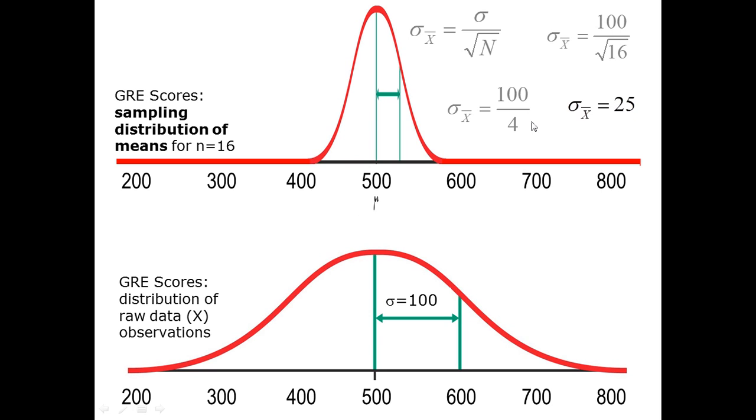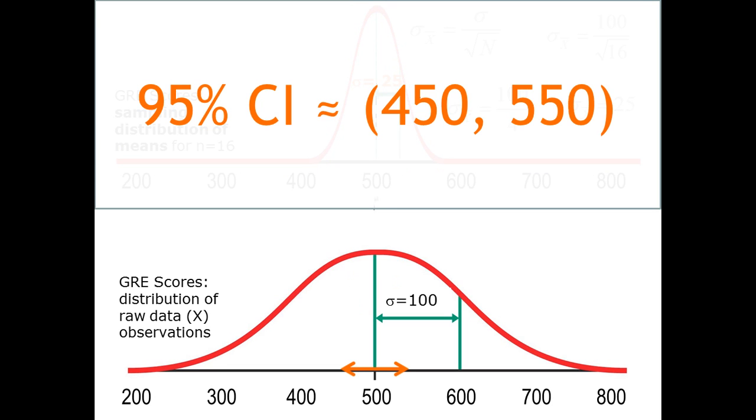The sampling distribution has a standard deviation of 25 now. In other words, a standard error of 25, a standard error of the mean. So now two standard deviations down and two standard deviations up from 500 is a smaller range. So two standard deviations down is only 50, and two standard deviations up is only 50. So now the confidence interval only covers 100 points. It goes from 450 to 550. It's smaller now.